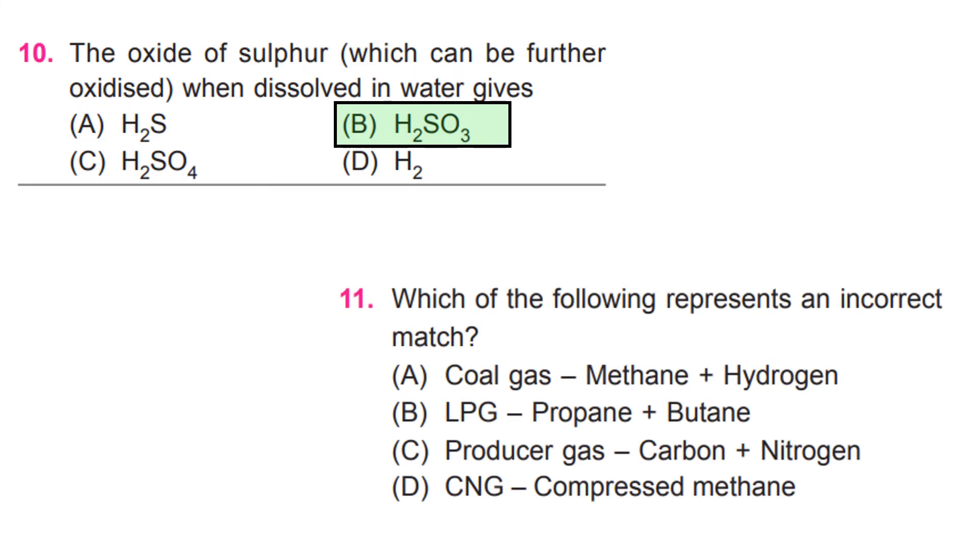Which of the following represents an incorrect match? C, producer gas: carbon plus nitrogen.